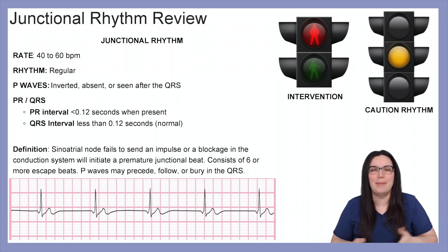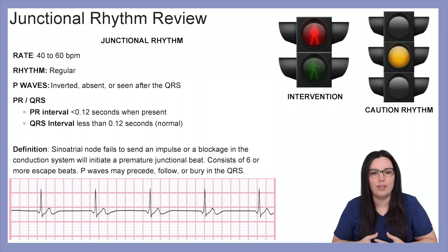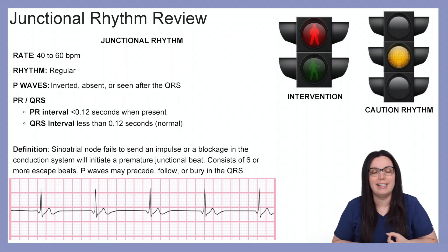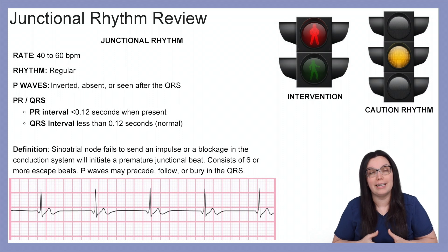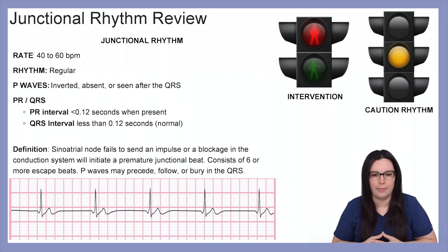Let's begin by looking at our junctional rhythm. The rate will be between 40 to 60 beats per minute, and the rhythm will be irregular. P waves will either be inverted, absent, or seen after the QRS. The PR interval will be less than 0.12 seconds when present, and the QRS interval will remain normal.